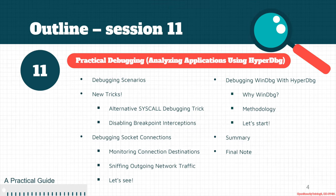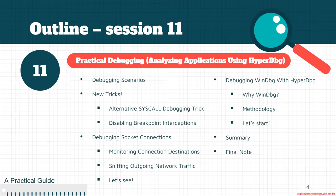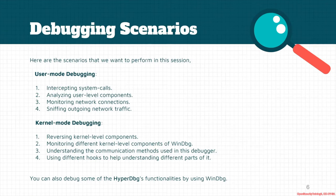As an overview, we will see some debugging scenarios, then we will learn some new tricks like alternative ways of debugging system calls and disabling a breakpoint interception mechanism in HyperDbg. Then we will see a user-mode application in which we monitor TCP connection destinations, sniff outgoing network traffic, and for the kernel-mode part we will debug WinDbg using HyperDbg.